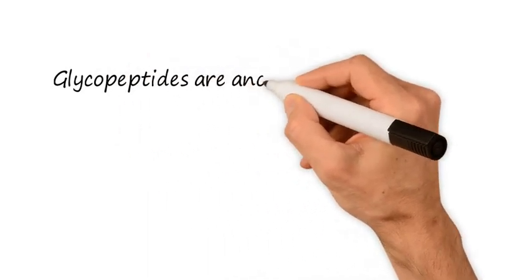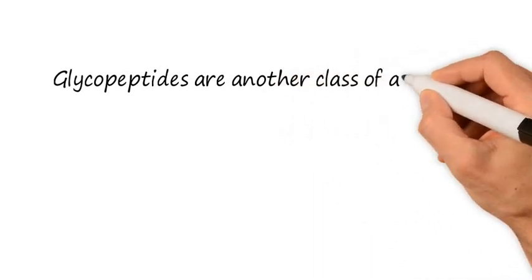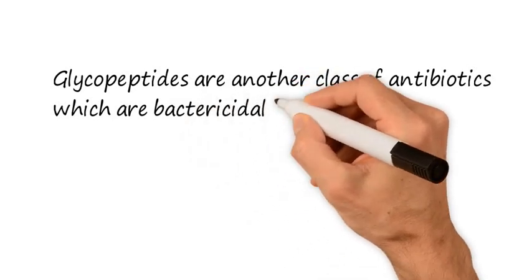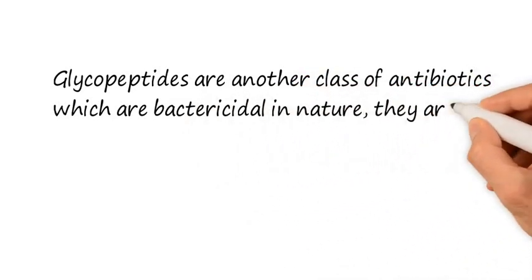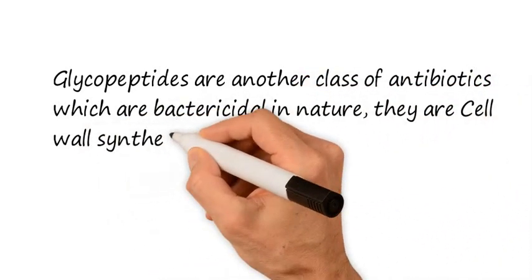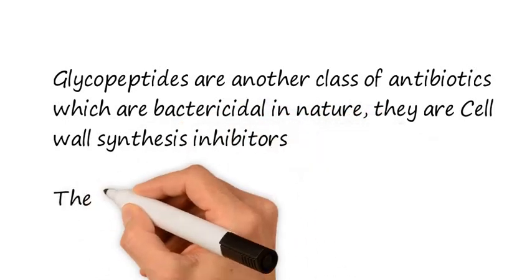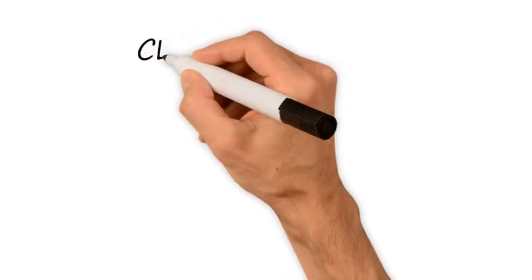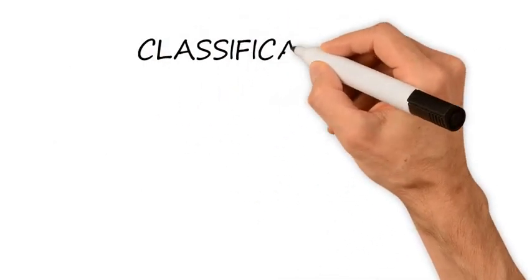Glycopeptides are bactericidal in nature, means they can kill or destroy the bacterium completely. They are cell wall synthesis inhibitors. The prototype of the glycopeptide is vancomycin, so I am discussing the pharmacology of vancomycin.